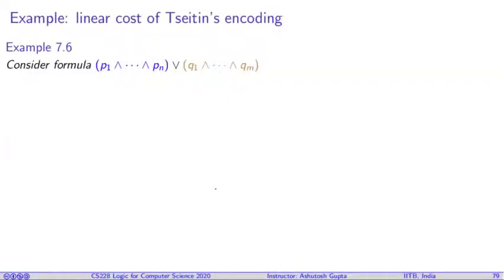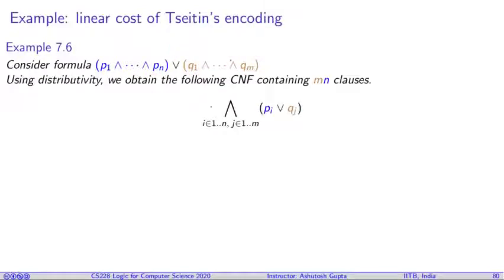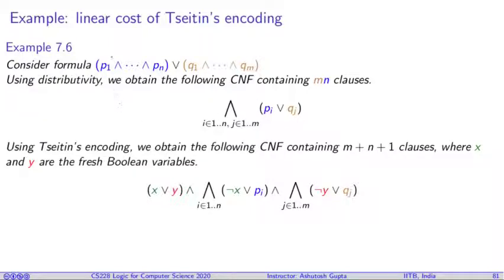So let's look at an example. Consider this formula. It has two conjunctions sitting under a disjunction. And if we had applied distributivity and done the transformation via distributivity, we would have created MN clauses. Now, if we apply this Tseitin encoding, we must observe there are two conjunctions P₁ to Pₙ and Q₁ to Qₙ which are wrongly placed. So for each of them, I will create a variable X and Y. If we replace these conjunctions by our new fresh variables, we obtain this clause.